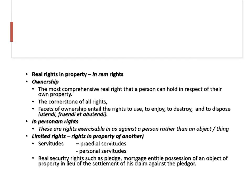Still on the types of property rights, we have what are called limited rights in the property — rights in the property of another, expressed as iura in re aliena. In this class we have servitudes — praedial servitudes and personal servitudes. We also have real security rights such as mortgage and pledge, which entitle possession of an object of property in lieu of a claim. Security rights are also part and parcel of the rights that can be enjoyed in respect of property.